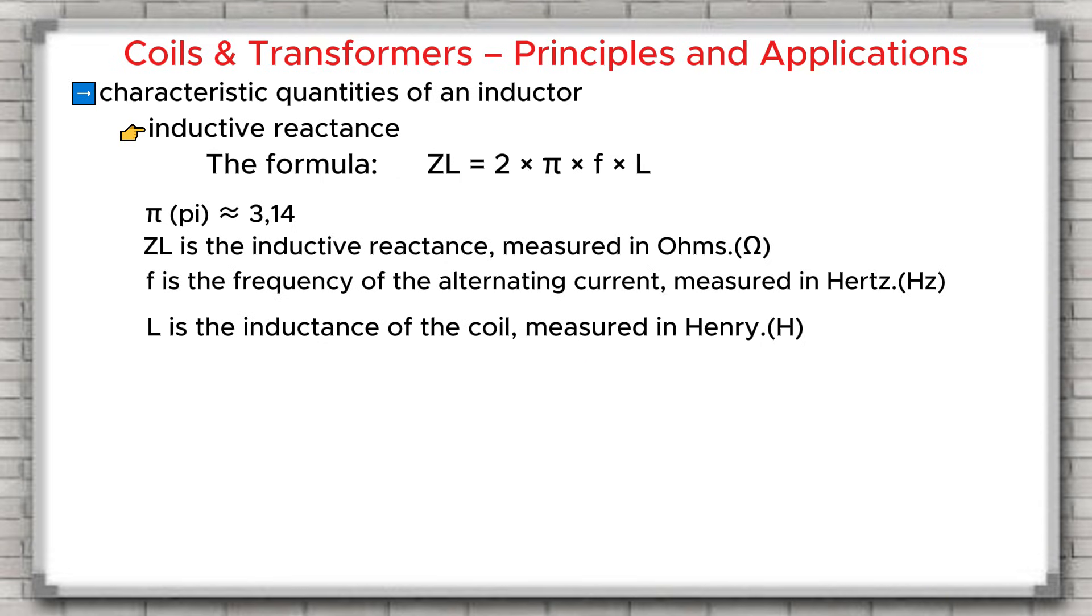F is the frequency of the alternating current measured in Hertz. L is the inductance of the coil measured in Henry. The meaning of each part: The term 2 times π relates to the oscillating nature of alternating current. F, the frequency, shows how fast or how slow the alternating current changes. L, the inductance, shows the ability of the coil to resist the change in current.